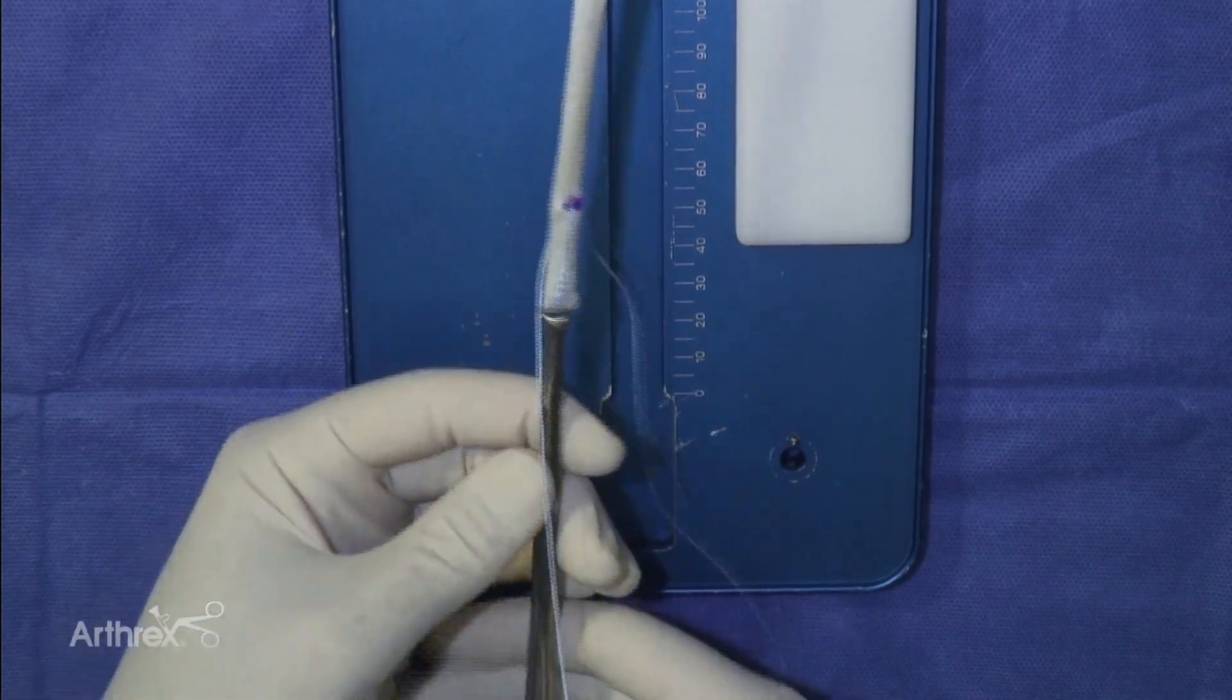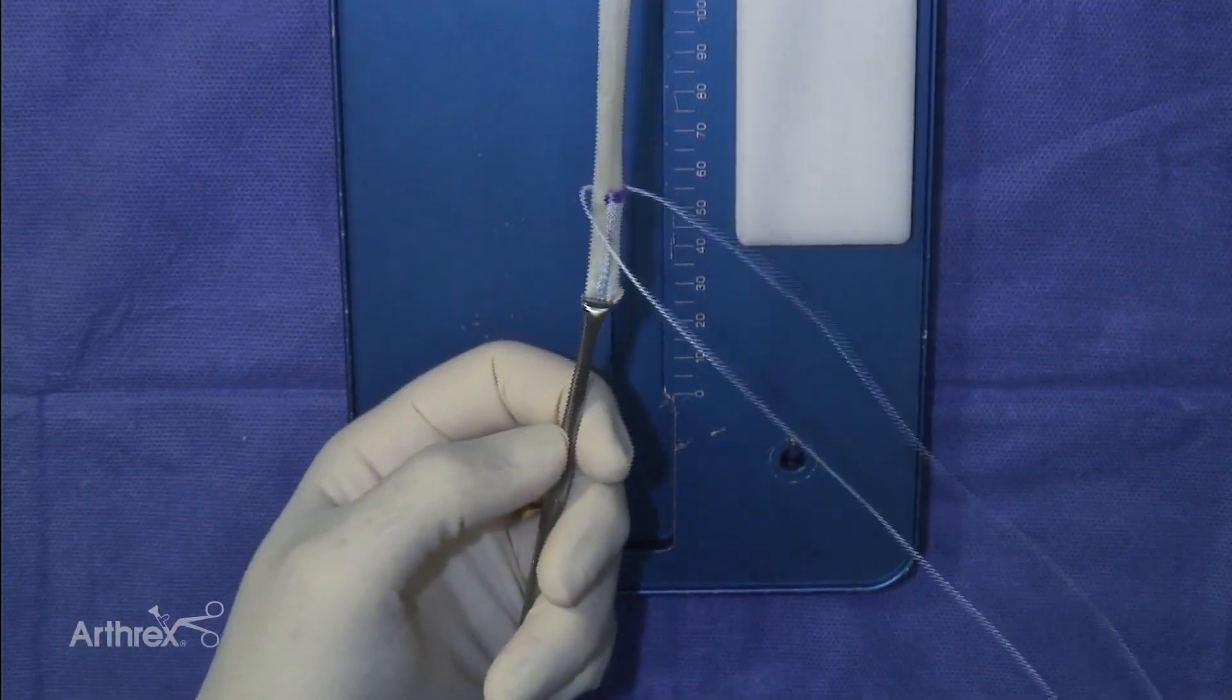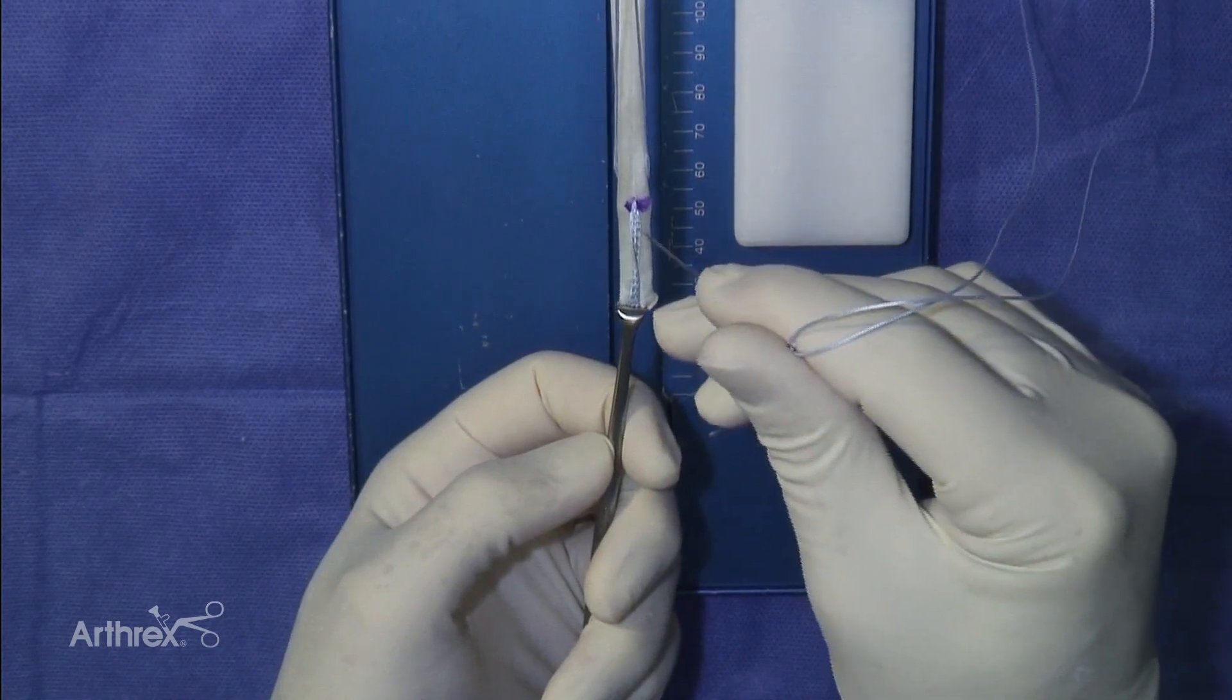Spread out the limbs of the fiber loop and pass the graft through the middle of the loop. Pull the suture proximally to facilitate passage of the needle.